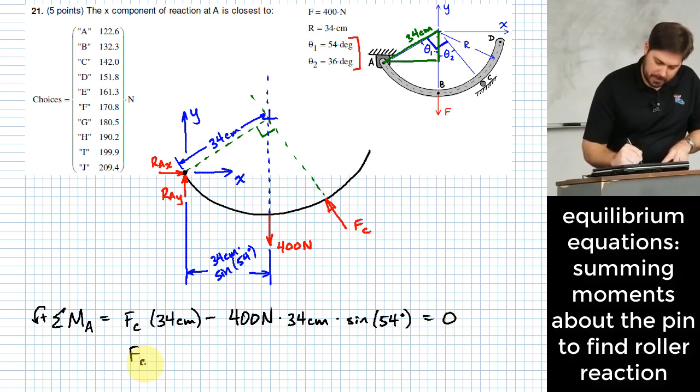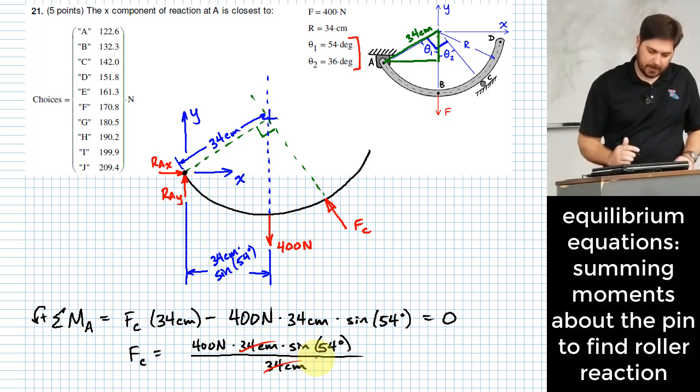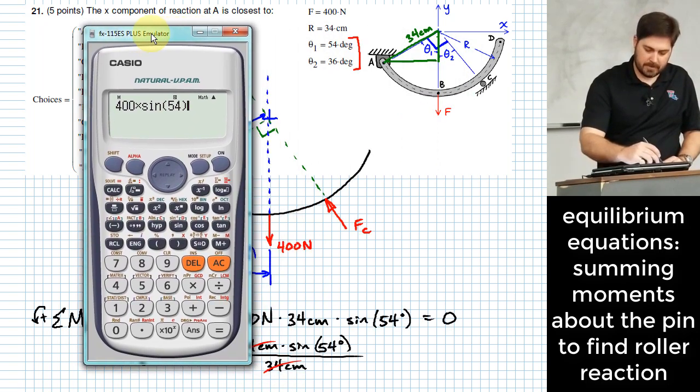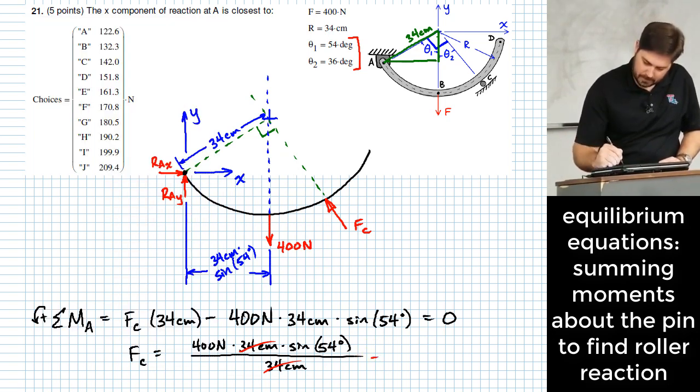And this is all equal to zero, which means F sub C is just going to be equal to 400 newtons times 34 centimeters times the sine of 54 degrees all over 34 centimeters. Alright. So you just end up with 400 times the sine of 54 degrees. Make sure your calculator is in the right angle mode. 323.6 Newtons, right?